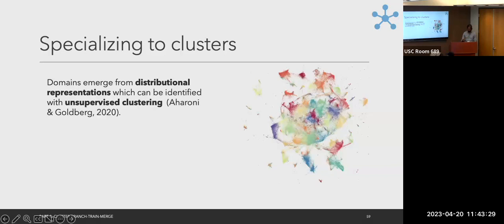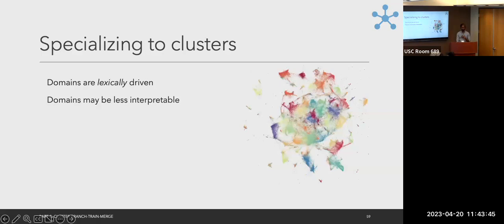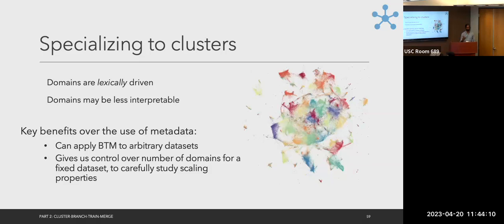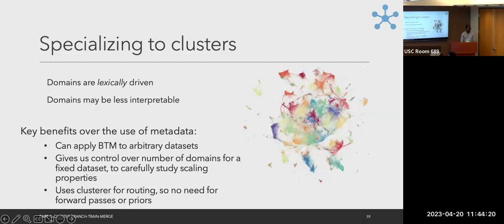In this part, we rid ourselves of the requirement for metadata and assume domains emerge from distributional representations of a pre-trained model, identified with unsupervised clustering. Clustering implies domains are lexically driven, which may not be fully optimal, and domains are less interpretable than metadata-based ones. But this notion of domain lets us apply BTM to arbitrary datasets, gives us control over the number of domains for a fixed dataset size, and — as I'll show — lets us use the cluster for routing at inference time, avoiding forward passes on all experts.